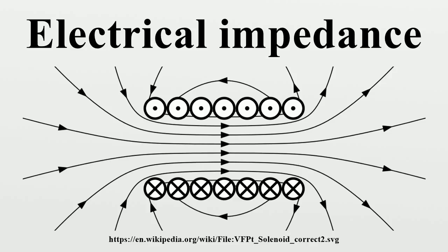A capacitor has a purely reactive impedance which is inversely proportional to the signal frequency. A capacitor consists of two conductors separated by an insulator, also known as a dielectric. At low frequencies, a capacitor is an open circuit so no charge flows in the dielectric. A DC voltage applied across a capacitor causes charge to accumulate on one side; the electric field due to the accumulated charge is the source of the opposition to the current. When driven by an AC supply, a capacitor will only accumulate a limited amount of charge before the potential difference changes sign. The higher the frequency, the less charge accumulates and the smaller the opposition to the current.